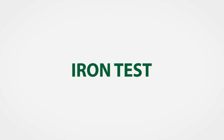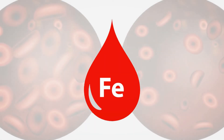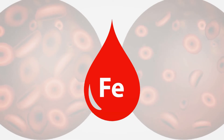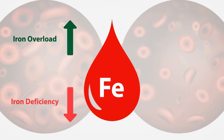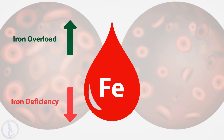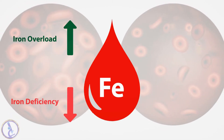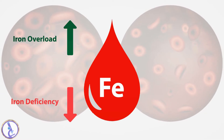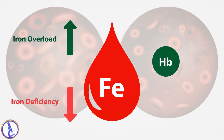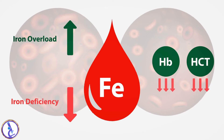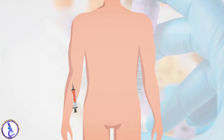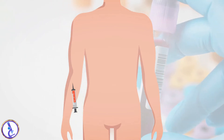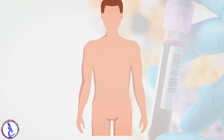The iron test is performed to determine your blood iron level when your healthcare practitioner suspects that you may have too little iron (deficiency) or too much iron (overload) in your body. Normally it is ordered as a follow-up test when results from a complete blood count show that a person's hemoglobin and hematocrit are low. The sample required is a blood sample drawn from a vein in your arm.